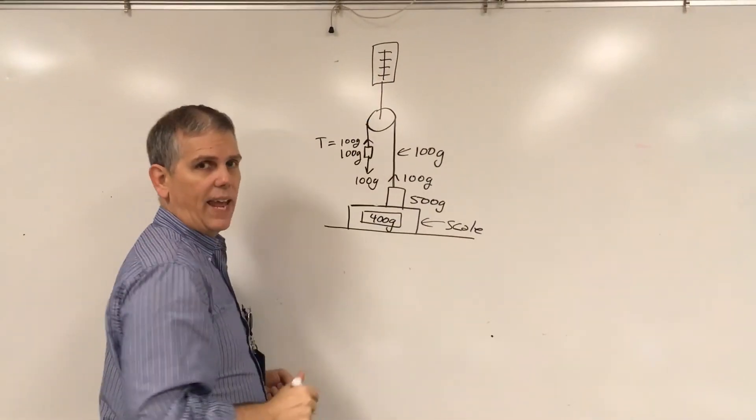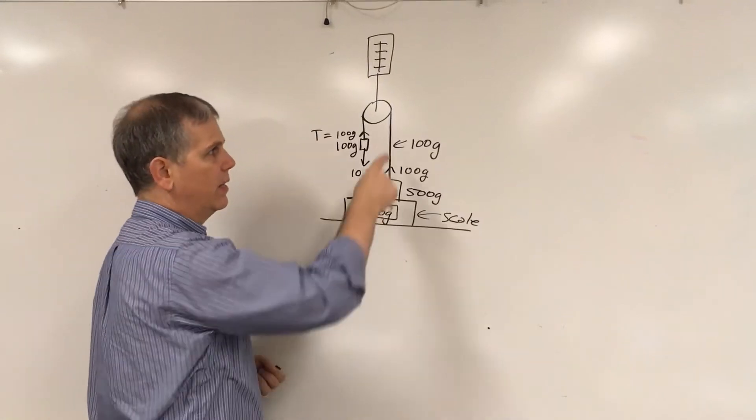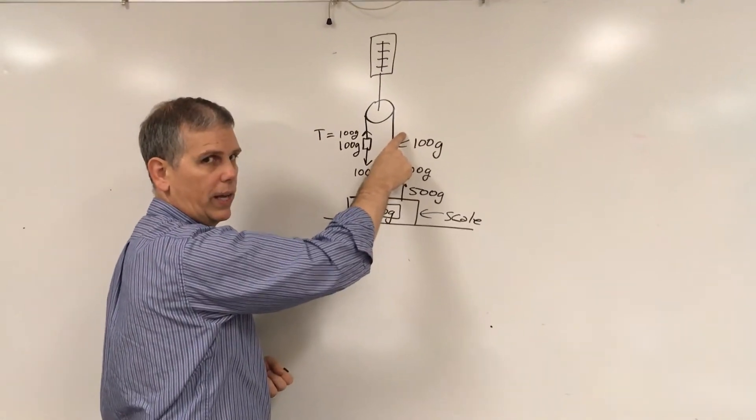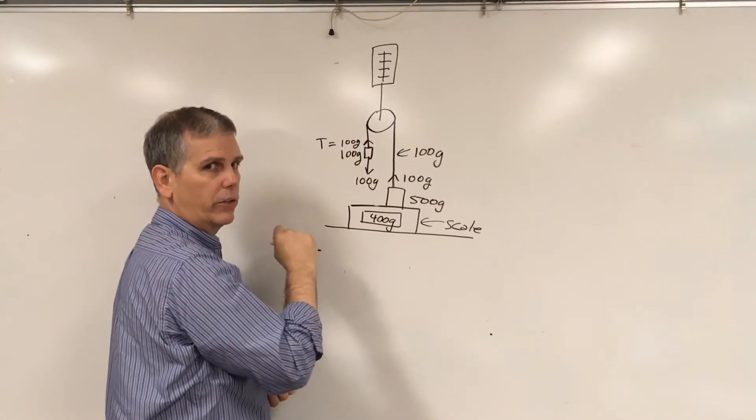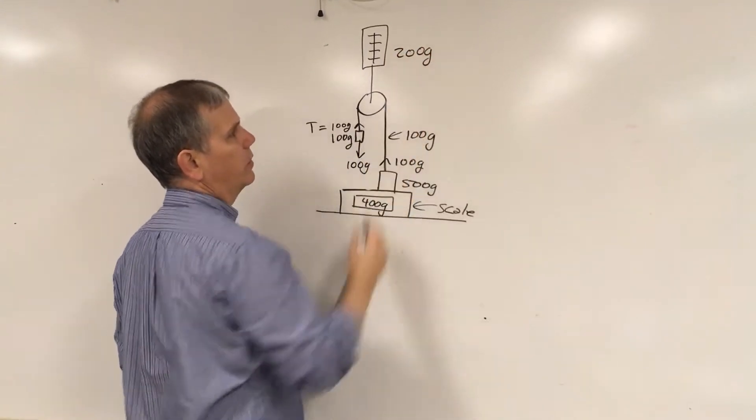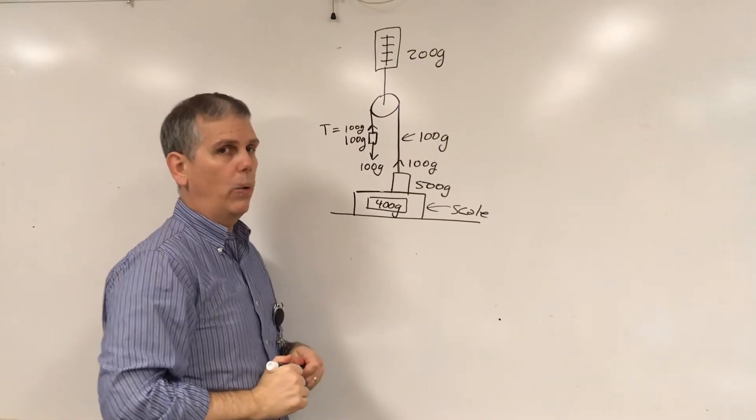But what about this scale up above? This rope pulls down with 100 grams. This pulls down with 100 grams giving us 200 grams to show that ropes always pull.